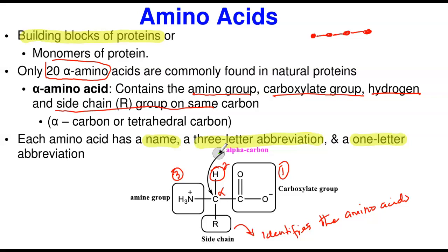The side chain tells you whether this amino acid is alanine or glycine. Each amino acid has designations: a name, a three-letter abbreviation, and a one-letter abbreviation. In this class, we'll use names and the three-letter abbreviation. The alpha carbon is the central carbon to which all the other groups are attached.